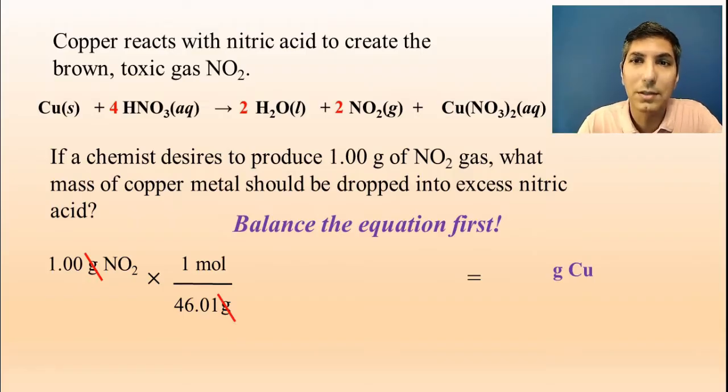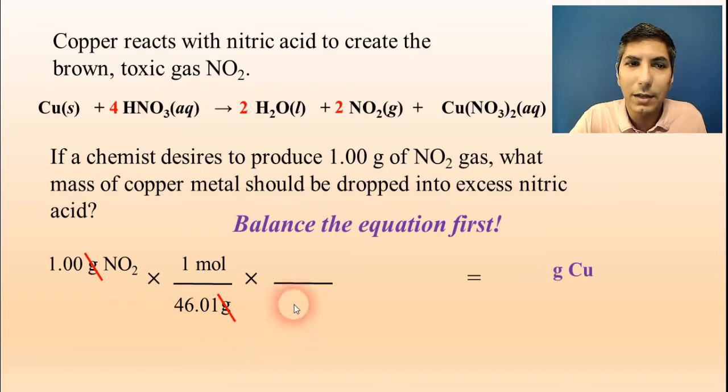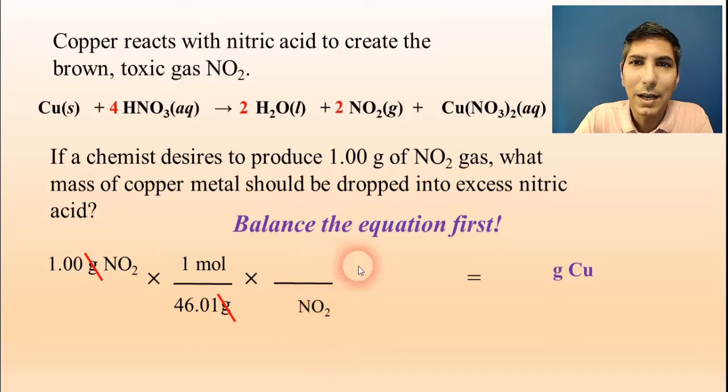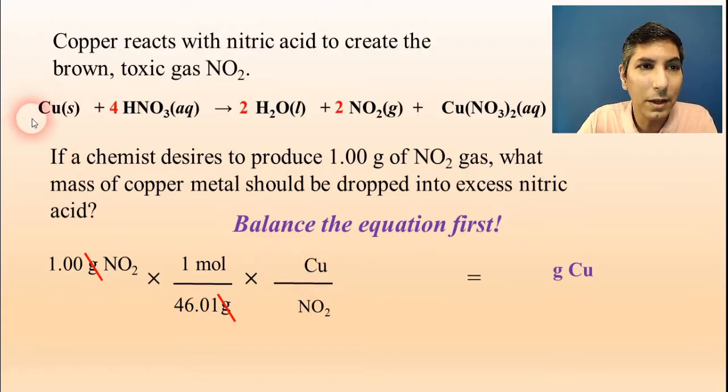Now we are ready for step two, which is the mole ratio. Instead of having units in this mole ratio, we're going to use substances from the equation. Since we're starting with NO₂, I'm going to put NO₂ on the bottom so it'll cancel out. Since I'm trying to convert to copper, I'm going to put copper on the top. The numbers for the mole ratio are coming straight from the balanced equation, the coefficient. Next to copper in the balanced equation, there's nothing there, so that's understood to be a one. Next to NO₂, there's a coefficient of two, so I put a two right there. This is a one to two ratio. NO₂ cancels out top and bottom.